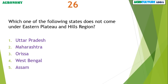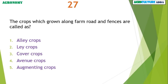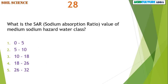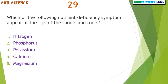Which one of the following states does not come under eastern plateau and hills region? Crops which grow along farm roads and fences are called avenue crops. What is the SAR (sodium absorption ratio) value of medium sodium hazard water? 10 to 18.